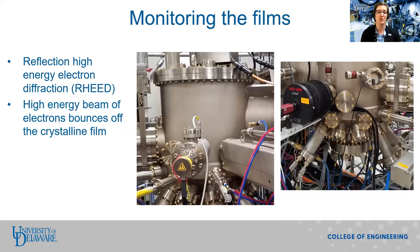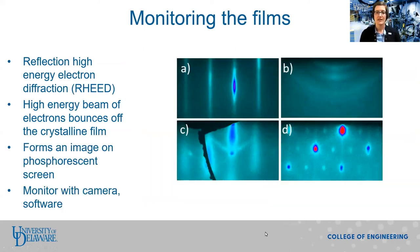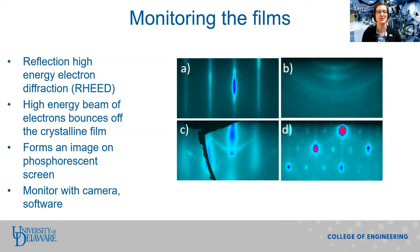Finally, we can monitor the film quality while it is being grown using a technique called reflection high-energy electron diffraction, or RHEED. RHEED uses a high-energy beam of electrons generated in the electron gun to diffract off the crystalline film. These electrons then impinge upon a phosphorescent screen. The electrons form an image, and by monitoring this image, we can determine if the film is crystalline or amorphous, whether it is atomically smooth or has a rough surface, what the spacing between the atoms in our film is, and how quickly the film is growing. We have a camera and software to help us interpret the RHEED data.